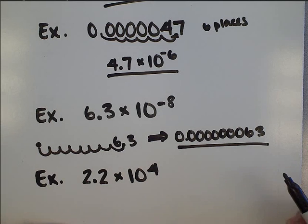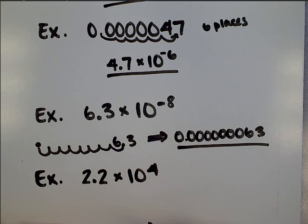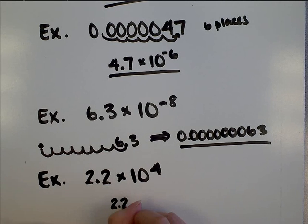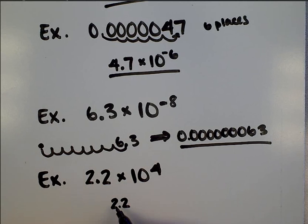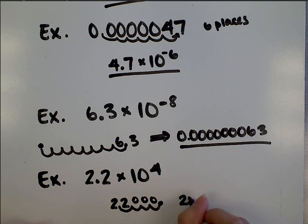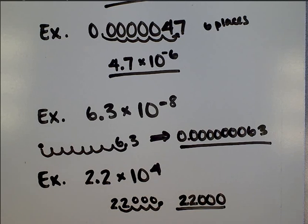One final example. So now we've got 2.2 times 10 to the 4th power. Sorry, that's kind of blurry, but it is a 4. So I'm going to write 2.2 right here. I know I need to move the decimal 4 places. Since this is a positive exponent, that tells me this is supposed to be a big number. So I'm going to move the decimal point to the right to make it a big number. 1, 2, 3, and 4. So that gives me 22,000 as my final answer.